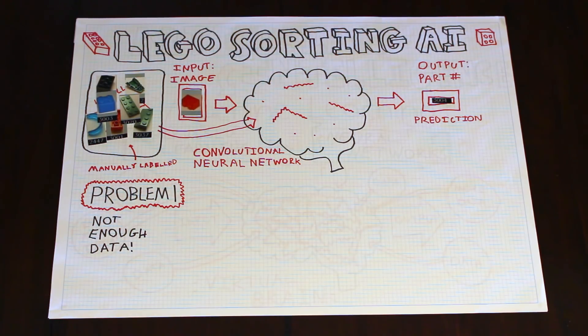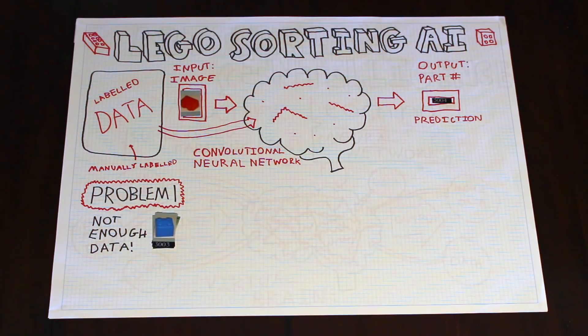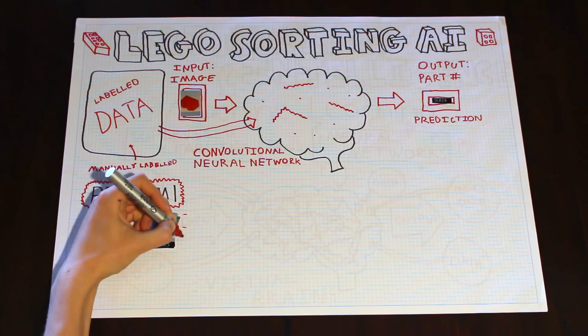For the network to be able to recognize parts reliably, the number of images we will need is huge. Manually labeling enough images would just take far too much time. And this is a really big problem in heaps of AI projects.